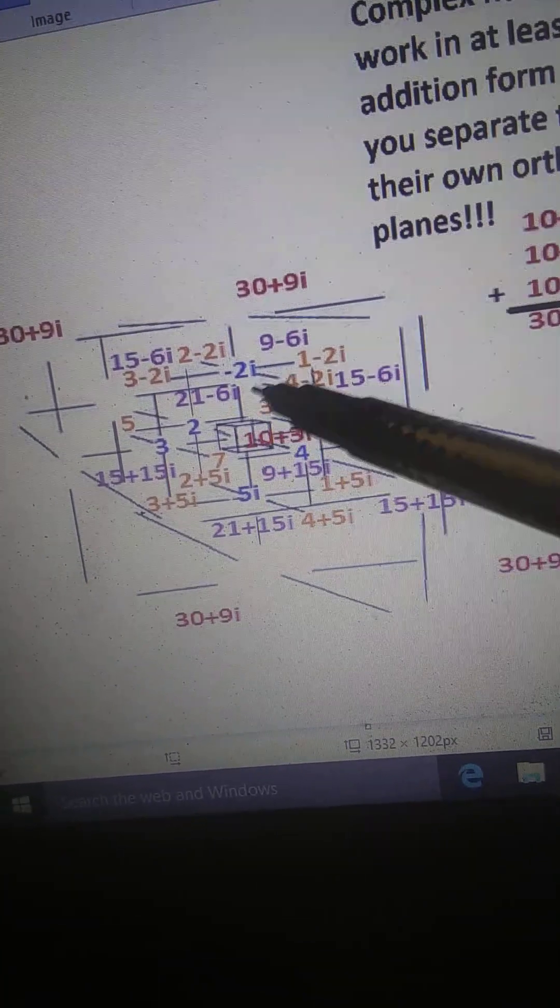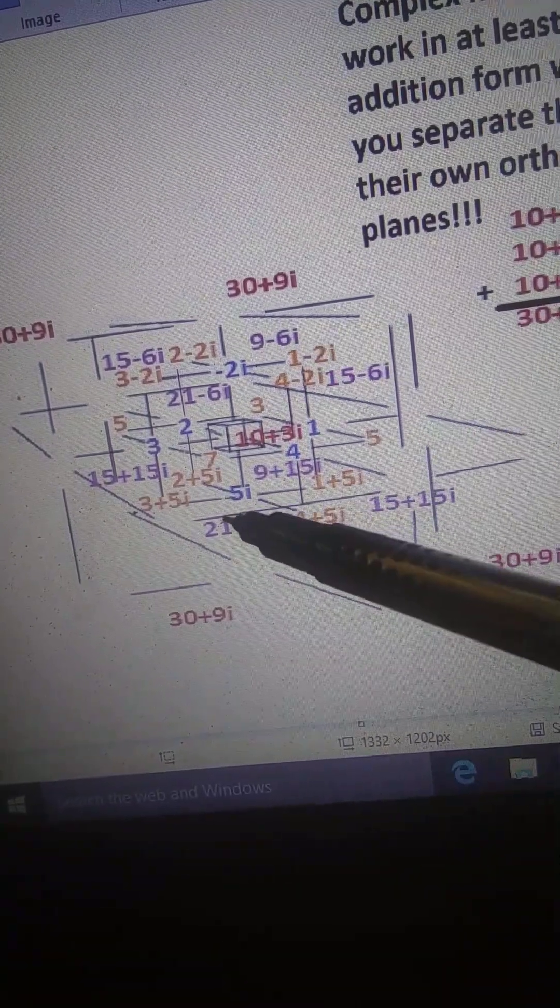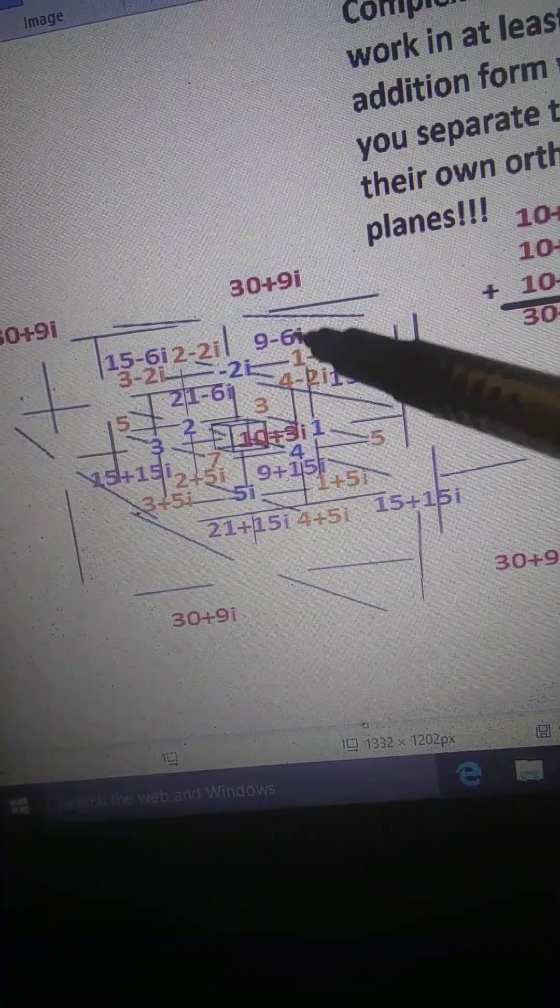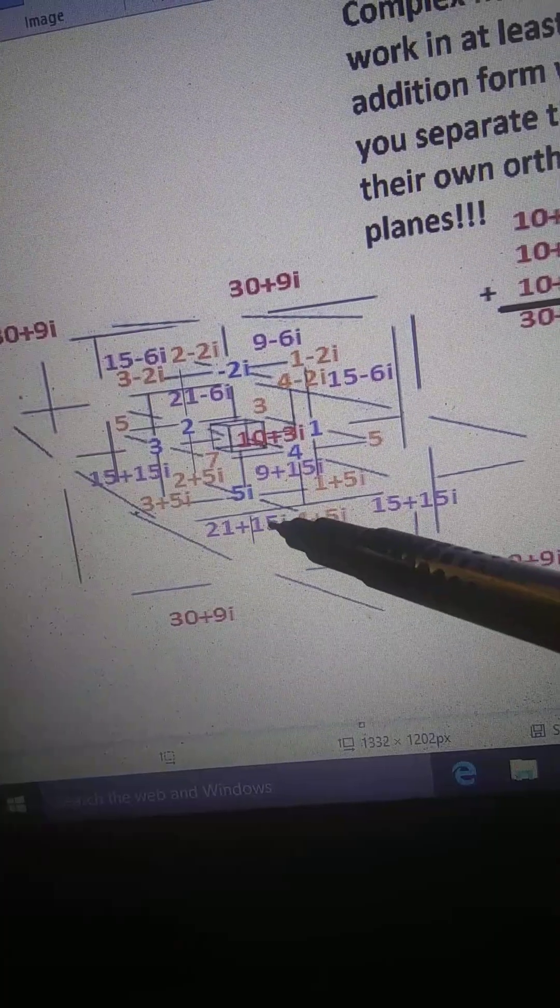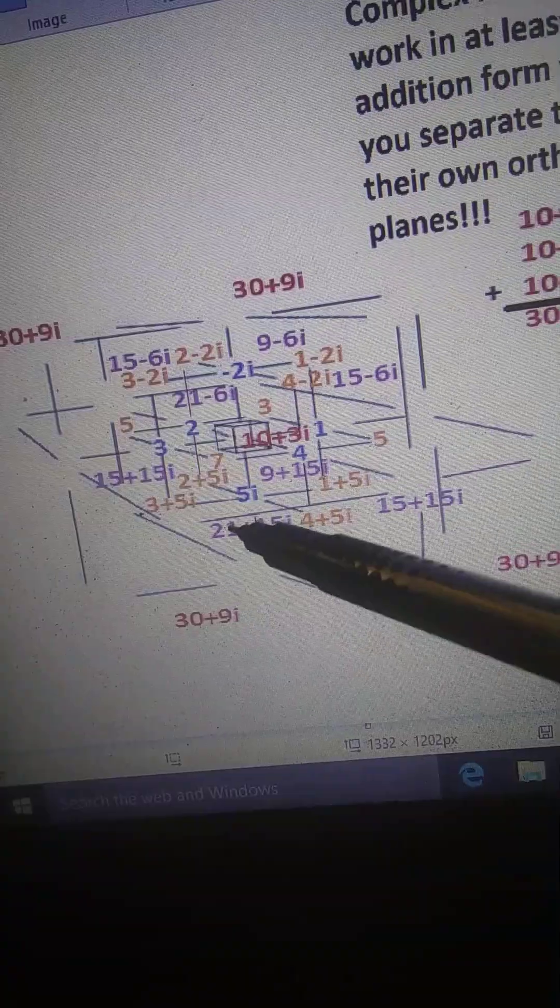Then over here is nine negative six i. Down here is twenty one positive fifteen i. So negative six plus positive fifteen for the imaginary part, you get nine on both sides, positive nine i.